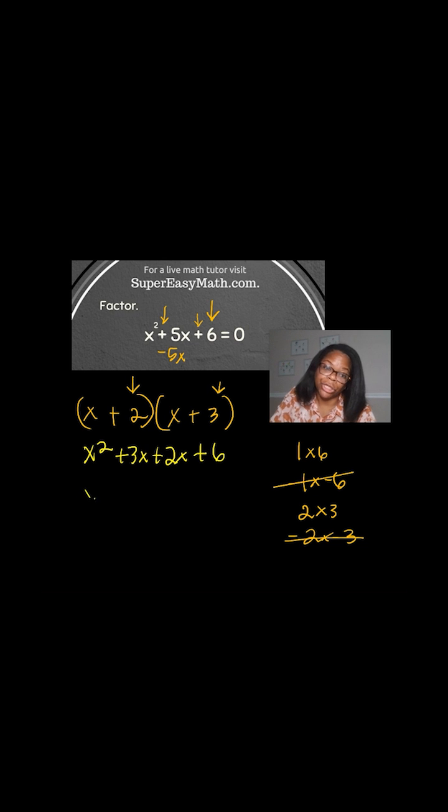Now I'm going to combine like terms, which in this case is only the two center terms. I have 3x plus 2x, which gives me 5x plus 6. So it looks like the factors of 2 and 3 were correct because I ended up getting the original problem back, x² + 5x + 6. That means it worked.